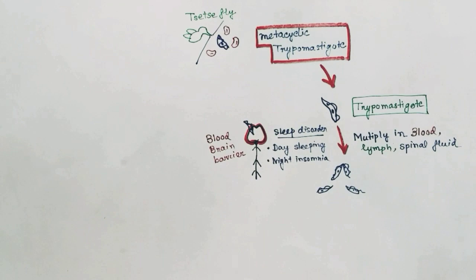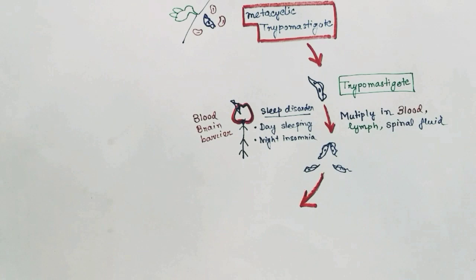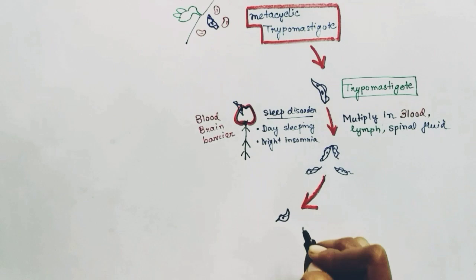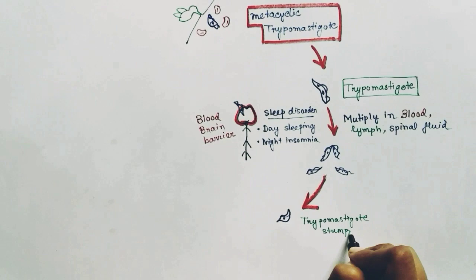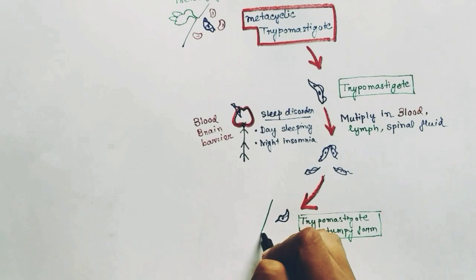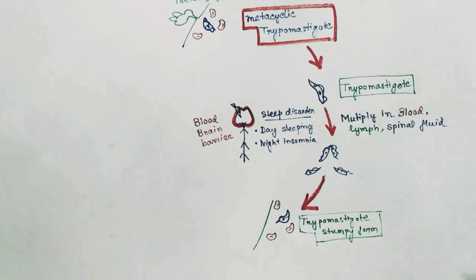It causes daytime sleeping and night-time insomnia — that is why it is called sleeping sickness. The trypomastigotes also form a stumpy, or short, form; both the slender and stumpy forms are present in the blood.